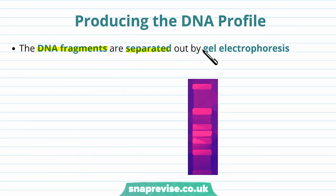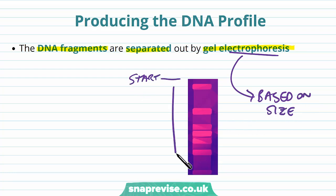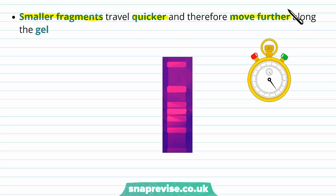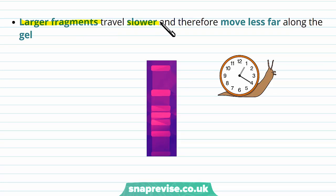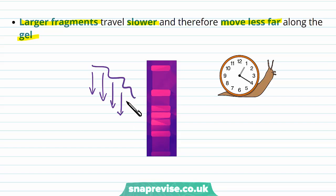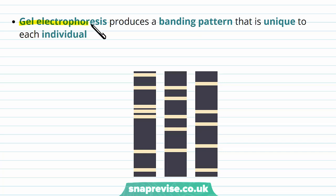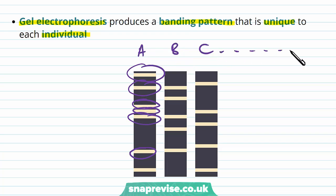The DNA fragments are then separated out by gel electrophoresis, which separates based on the size of the DNA fragments. Smaller fragments travel quicker and therefore move further along the gel in a given amount of time, while larger fragments travel slower and therefore move less far along the gel — because their length causes the gel to oppose their movement. When it's finished, the gel electrophoresis produces a banding pattern which is unique to every single individual, because everyone will have different lengths of fragments based on the number of repeats. All of these bands will be unique in their size and position for each individual across the whole population.